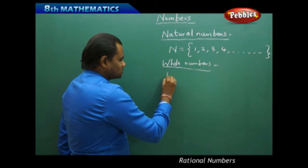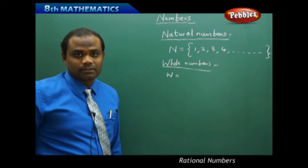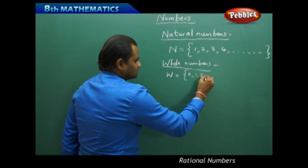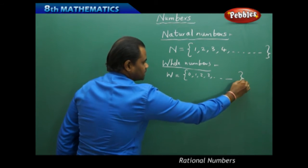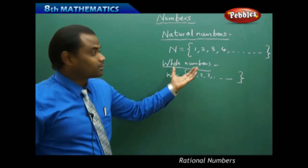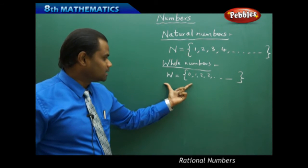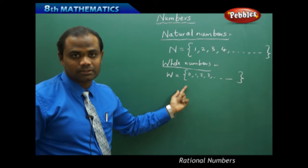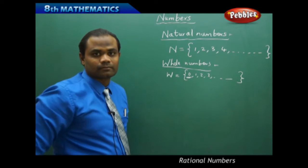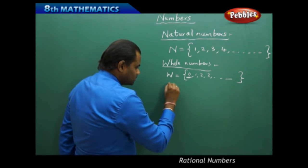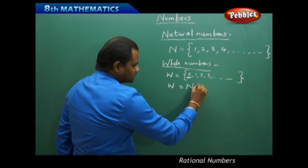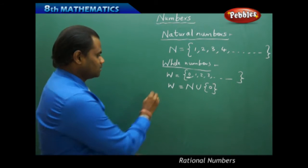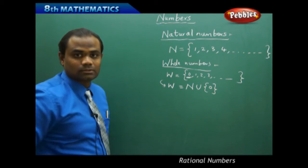Whole numbers are generally denoted by W and they start with 0 and end at infinity. The difference between natural numbers and whole numbers is that whole numbers are the set of natural numbers with one additional element, 0. So I can mathematically define whole numbers as all natural numbers including the element 0.